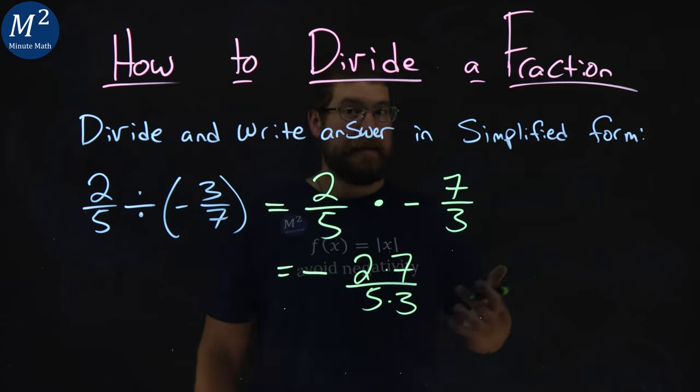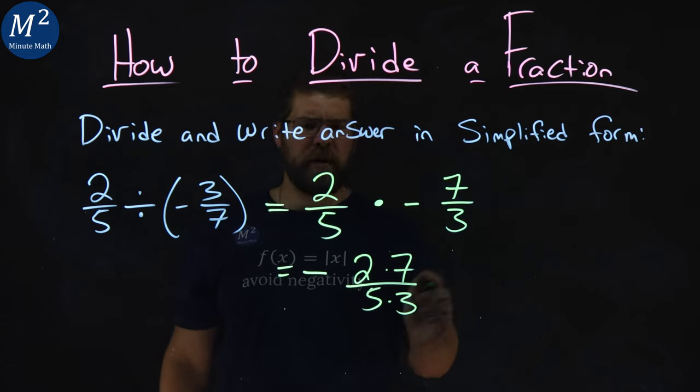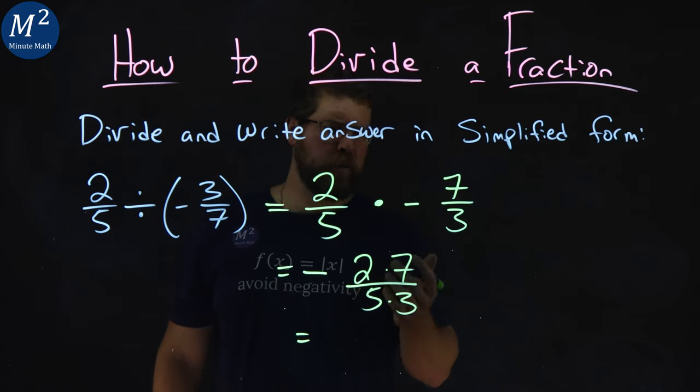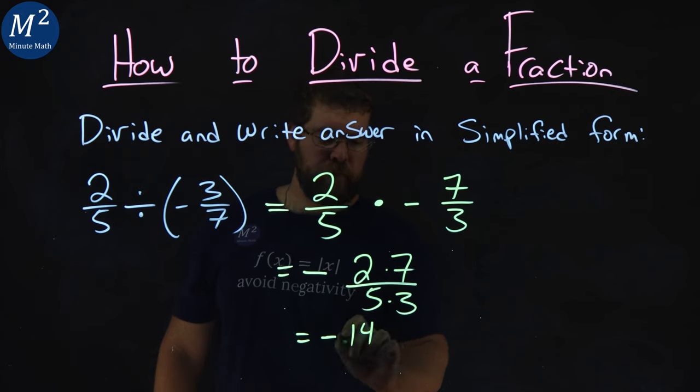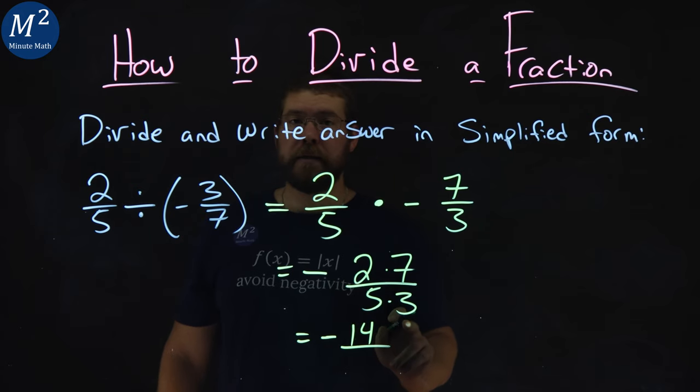None of these values really cancel out, so we just have to multiply across the top and bottom. Numerator, denominator. Negative. Two times seven, well, that's fourteen. And five times three is fifteen.